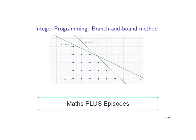In this video, we shall refer to the integer programming branch and bound method. We shall come across linear programming problems in which some or all of the decision variables x1, x2, up to xn are restricted to be integers. In this series of videos, we shall first introduce the integer linear programming problems and then present the branch and bound method.